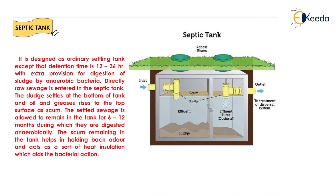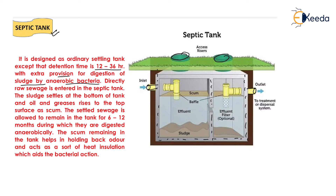Now we move to the septic tank. A septic tank has two types of access provided at ground level, and a large chamber is constructed deep inside the earth with a baffle wall, one inlet pipe, and one outlet pipe. It is designed as an ordinary settling tank except that the detention time is 12 to 36 hours, with an extra provision for digestion of sludge by anaerobic bacteria. There is no dissolved oxygen in the tank, so all processes are anaerobic. Raw sewage enters the tank; sludge settles at the bottom, and oil and grease rise to the top surface as scum.